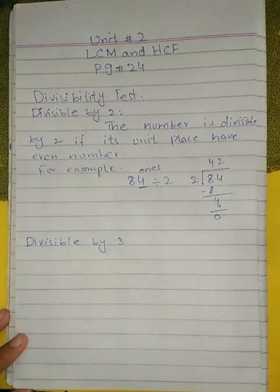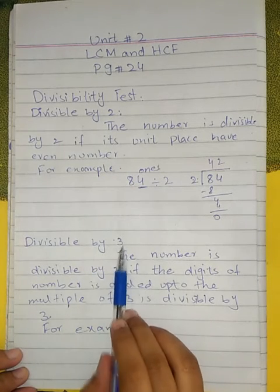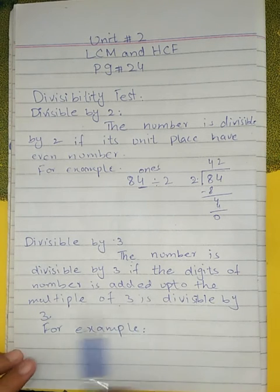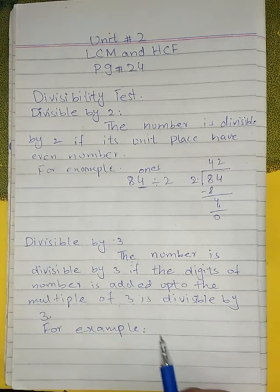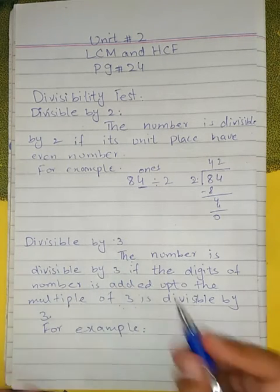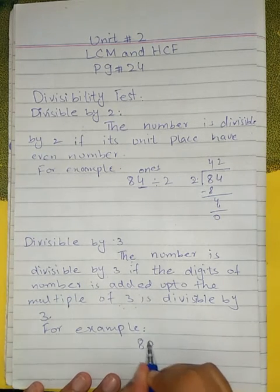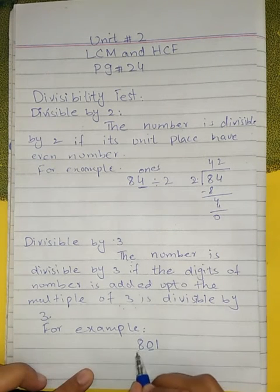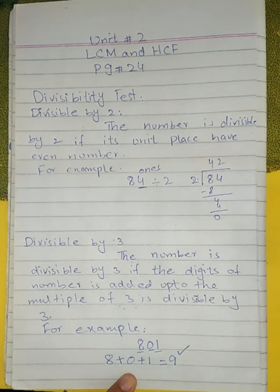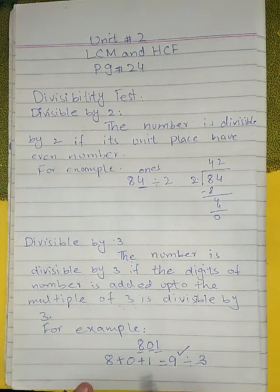Divisibility by 3: a number is divisible by 3 if the sum of its digits is a multiple of 3. For example, the number 801 — add the digits: 8 + 0 + 1 = 9. Since 9 is a multiple of 3 (3×3=9), the number 801 is divisible by 3.